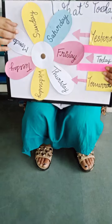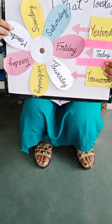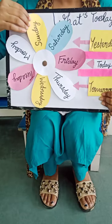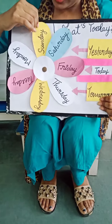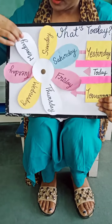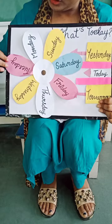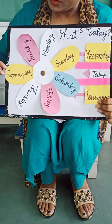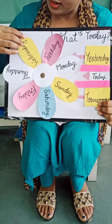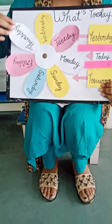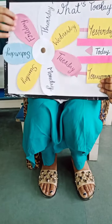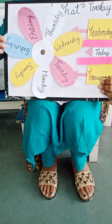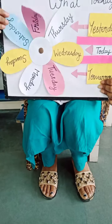Each week has 7 days. The days in a week are Sunday, Monday, Tuesday, Wednesday, Thursday, Friday and Saturday. There are 52 weeks in a year.